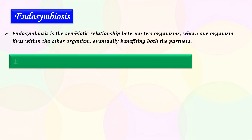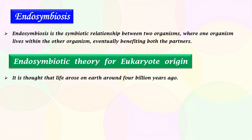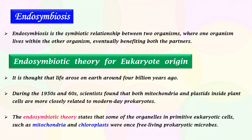Endosymbiotic Theory for Eukaryote Origin. It is thought that life arose on Earth around 4 billion years ago. During the 1950s and 60s, scientists found that both mitochondria and plastids inside plant cells are more closely related to modern-day prokaryotes. The endosymbiotic theory states that some of the organelles in primitive eukaryotic cells, such as mitochondria and chloroplast, were once free-living prokaryotic microbes.